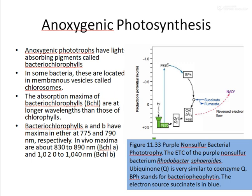During anoxygenic photosynthesis, the light-absorbing pigments called bacteriochlorophylls absorb light, and in some bacteria these pigments are located in membranous vesicles called chlorosomes. The absorption maximum of bacteriochlorophylls is at a longer wavelength than those of normal chlorophylls. Bacteriochlorophyll A and bacteriochlorophyll B have absorption maxima of 775 and 790 nanometers respectively in vitro, and in vivo conditions it is about 830–890 nanometers for bacteriochlorophyll A and about 1020–1040 nanometers for bacteriochlorophyll B.